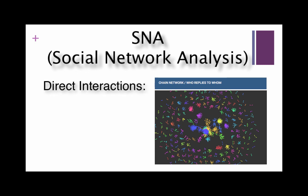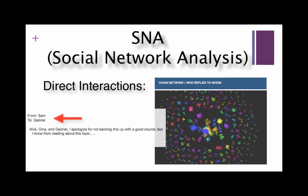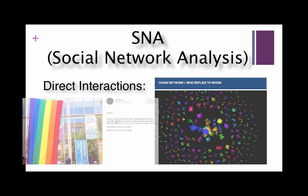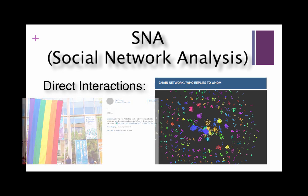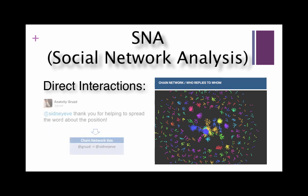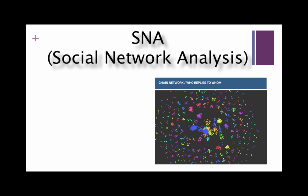When building a chain network visualization, Netlytic will look for names in the to or from fields, replies on Facebook or Instagram, or in the case of a Twitter dataset when a message begins with a username. Such information is not always available for all types of datasets, but if available, it will be stored in data fields such as 'in reply to' or 'to' in the CSV.